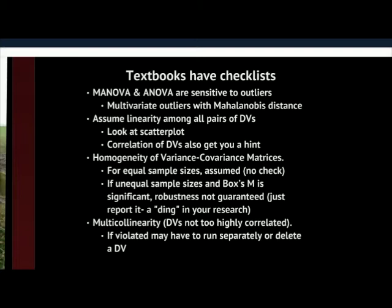Homogeneity of variance-covariance matrices is the most unique assumption you need to look at for MANOVA — you don't really need it for other previous types of analyses. This assumption is really important to check. If you have equal sample sizes in your MANOVA, most people say this is assumed and you don't really need to check it. It's rare though to have perfectly equal sample sizes unless you force that to happen. So if you have unequal sample sizes and Box's M is significant, you'll want to at least report that — your robustness is not guaranteed, and it's a ding in your research.